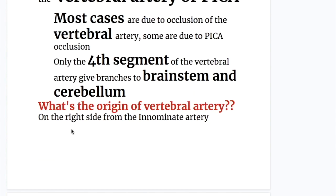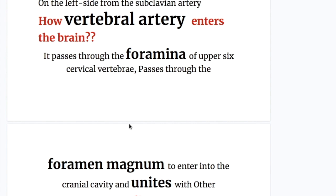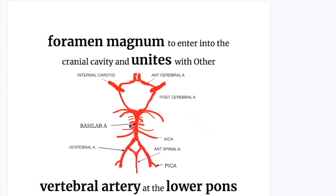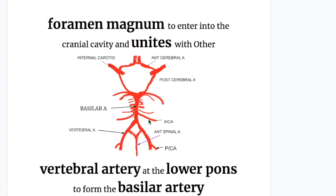Only the fourth segment of the vertebral artery gives branches to the brainstem and cerebellum. The vertebral artery arises from the innominate artery on the right side and from the subclavian artery on the left side. It passes through the foramina of the upper six cervical vertebrae, then through the foramen magnum to enter the cranial cavity, and unites with the other vertebral artery to form the basilar artery. Therefore, the posterior inferior cerebellar artery is a branch of the vertebral artery, and the anterior inferior cerebellar artery is a branch of the basilar artery.